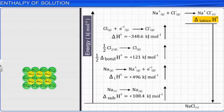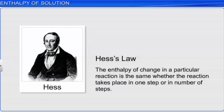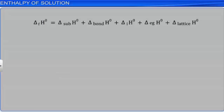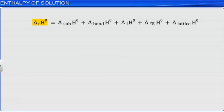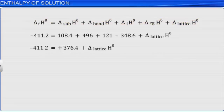Hess's law states that the enthalpy change in a particular reaction is the same whether the reaction takes place in one step or in a number of steps. Thus, enthalpy of formation = enthalpy of sublimation of sodium + enthalpy of dissociation of chlorine + enthalpy of ionization of sodium + electron gain enthalpy of chlorine + lattice enthalpy. On substituting the values of all the enthalpies, we get the value of lattice enthalpy as –788 kJ per mole.